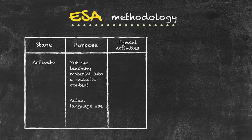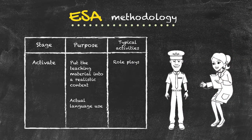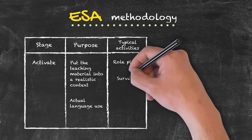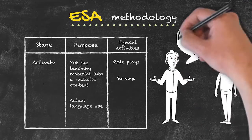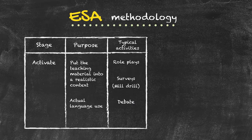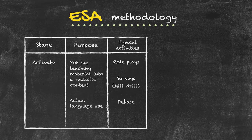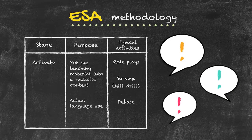Typical activities for the Activate stage include role plays, where students take on the role of a doctor, dentist, or patient and generate language using the particular teaching point. Another example is surveys, where students get up and go around asking questions of all the other students — this type of activity, where all students get up and interact with each other, is often called a mill drill. Students can also have a debate about a particular subject. Unlike the Study activities with targeted specific language, each of these activities generates different answers depending on which student you interview, using language in a realistic way rather than just answering a single question.